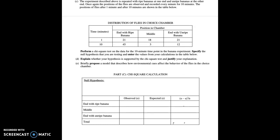Part C. The experiment described above is repeated with ripe bananas at one end. So if we have ripe bananas on this side, ripe, and we have a middle section here, and we have unripe on the other side. Once again, the positions of the flies are observed and recorded every 10 minutes. The positions of the flies after one minute and 10 minutes are shown below. So here are the times, or here are the numbers of flies in the positions at one minute and then at 10 minutes.